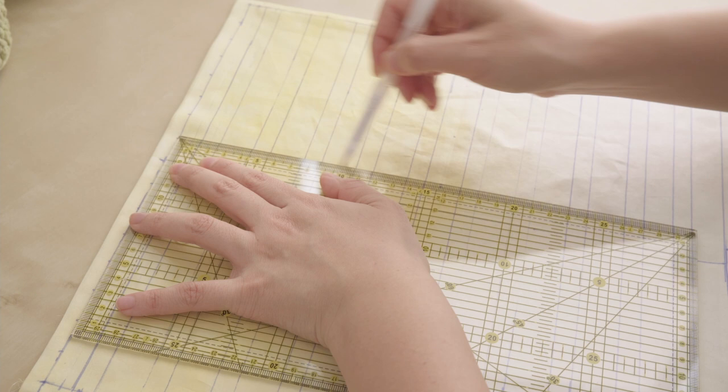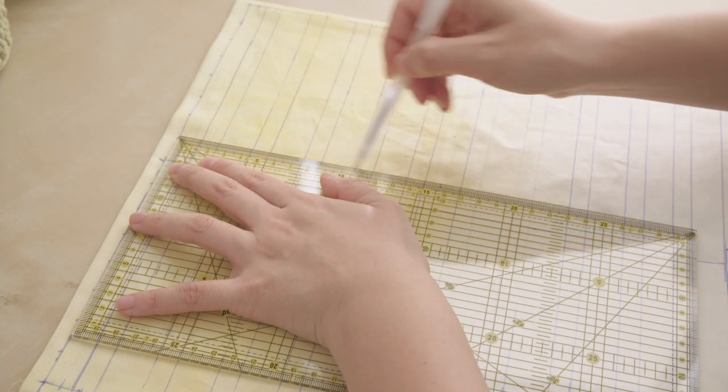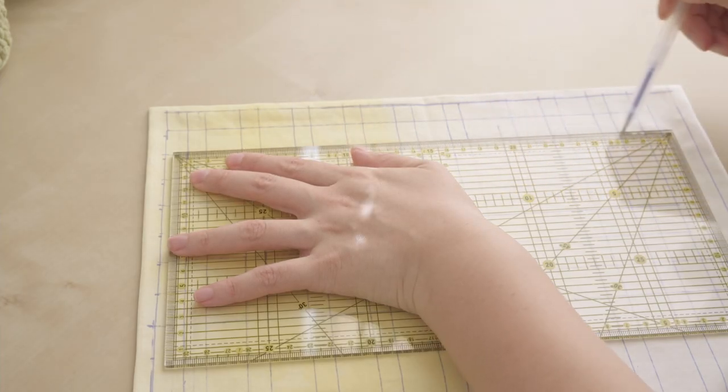For the vertical lines, let's start from the vertical folding line, then draw lines every 2 cm. Now, your grid is done.